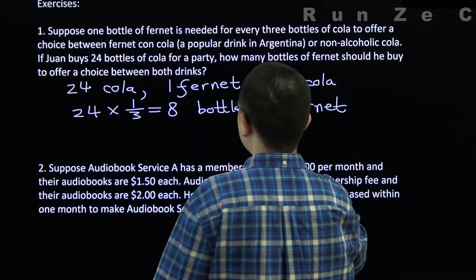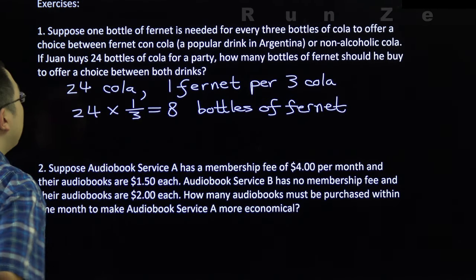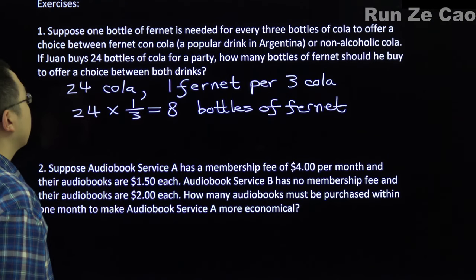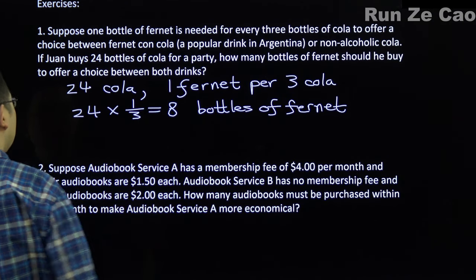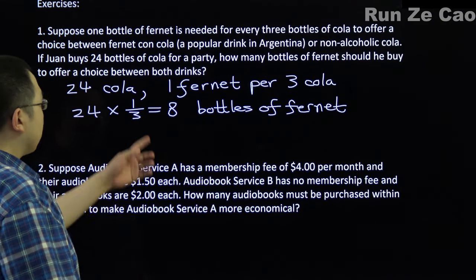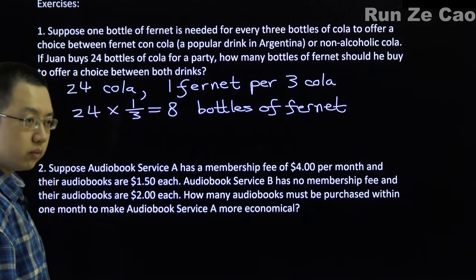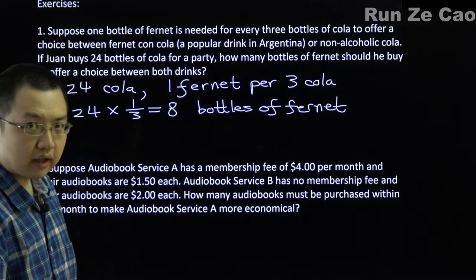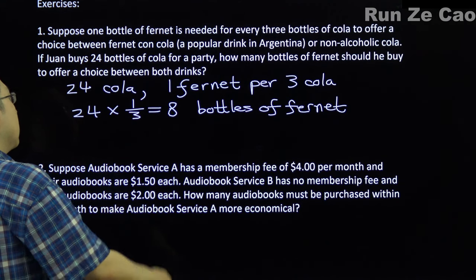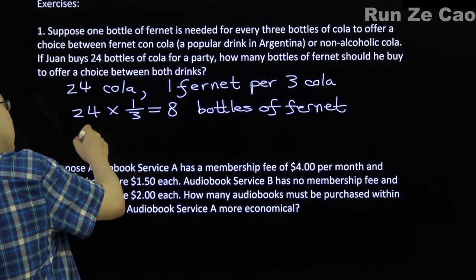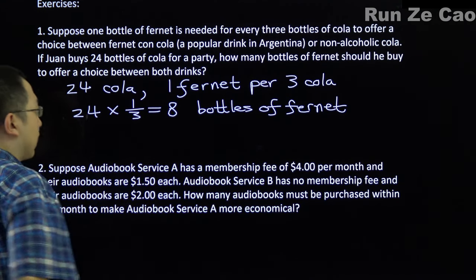He bought 24 bottles of cola, so we know 24 cola, one Fernet per three cola. Therefore, our plan is to go 24 times 1/3, because a ratio of one to three is equal to one over three. So 24 times 1/3 is equal to 8, and this would be bottles of Fernet. We check: one bottle of Fernet for every three bottles of cola, there are 24 bottles of cola, and 8 bottles of Fernet is one third of 24. Wonderful. He should buy 8 bottles of Fernet.